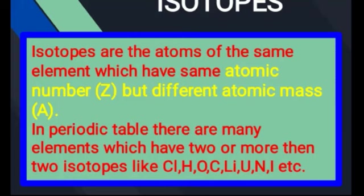جب number of neutrons different ہوں تو ہم shift ہو جاتے ہیں atomic mass کے concept پہ۔ Atomic number is the number of protons or electrons in an atom۔ اور atomic mass it is the sum of the number of protons and neutrons found in the nucleus of an atom۔ کسی atom کا weight nucleus میں پائے جانے والے subatomic particles — proton اور neutron — کے total weight کی وجہ سے ہوتا ہے۔